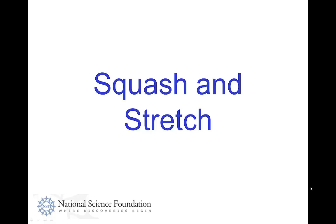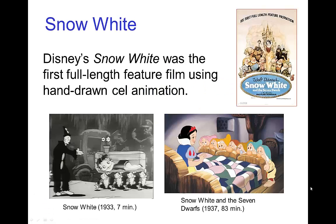Squash and Stretch. In 1937, Disney released his version of Snow White, and this was the first full-length feature film using hand-drawn cell animation, and it was quite revolutionary. To see how that contrasted with the previous animation at the time, let's compare another classic — Betty Boop's Snow White from 1933 — with Disney's Snow White.